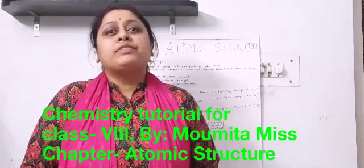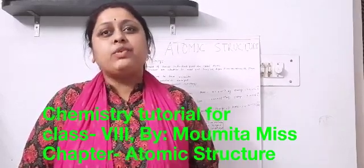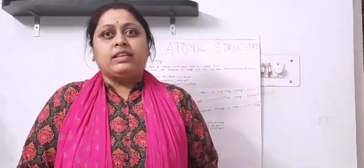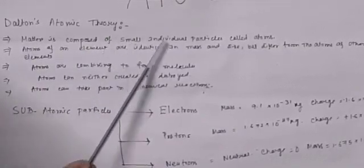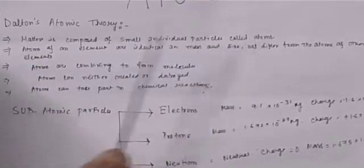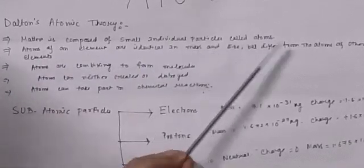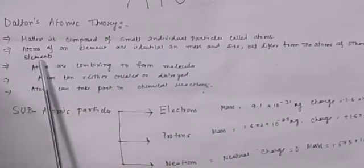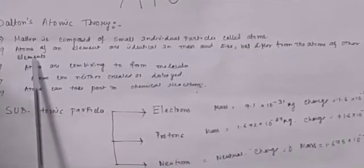The first atomic theory was proposed by Sir John Dalton in 1808, which is known as Dalton's atomic theory. The postulates of Dalton's atomic theory are: matter is composed of small individual particles called atoms. Second, atoms of an element are identical in mass and size but differ from the atoms of other elements. That means the same kind of elements will have atoms of the same size, but different kinds of elements will have different sizes of atoms. Next, atoms will combine together to form molecules.